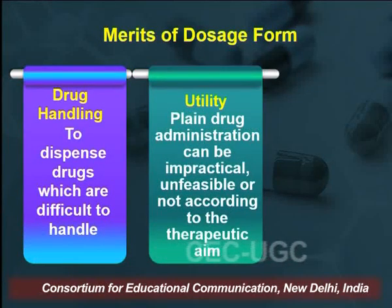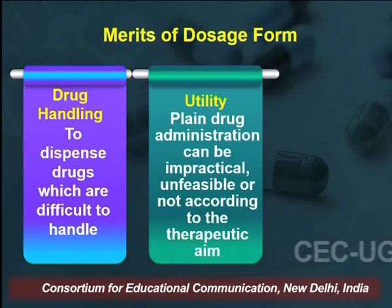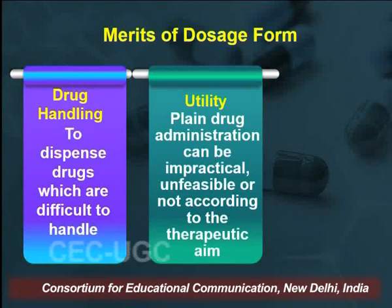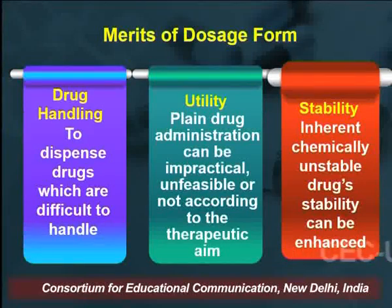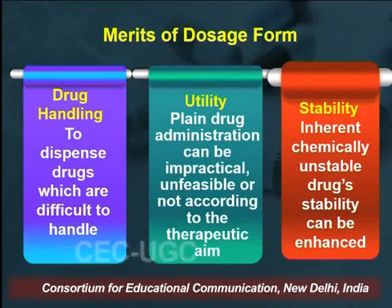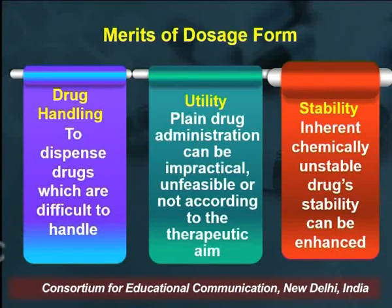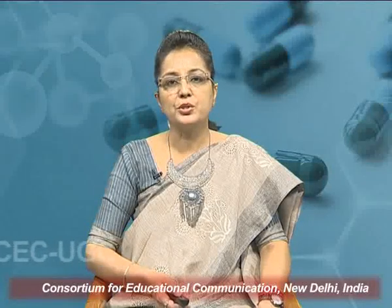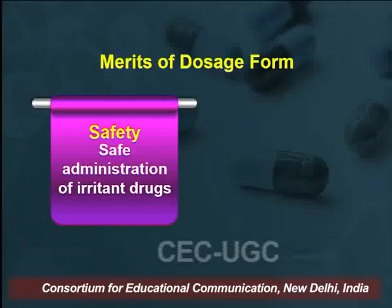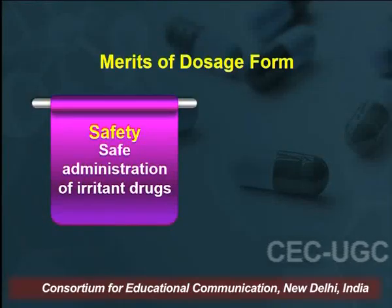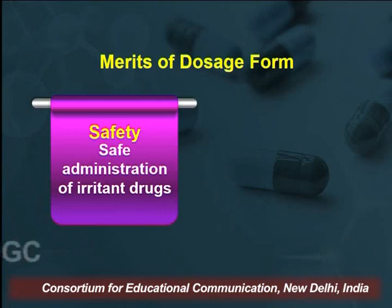The merit also covers utility — some drugs which are impractical or unfeasible to administer can be administered by means of a dosage form. It also helps in improving the stability of the drug, as some drugs have inherent chemical instability. A dosage form helps to build the drug's stability. The dosage form also helps in safety — it is very important to administer irritant drugs safely, and the dosage form helps in covering this parameter.